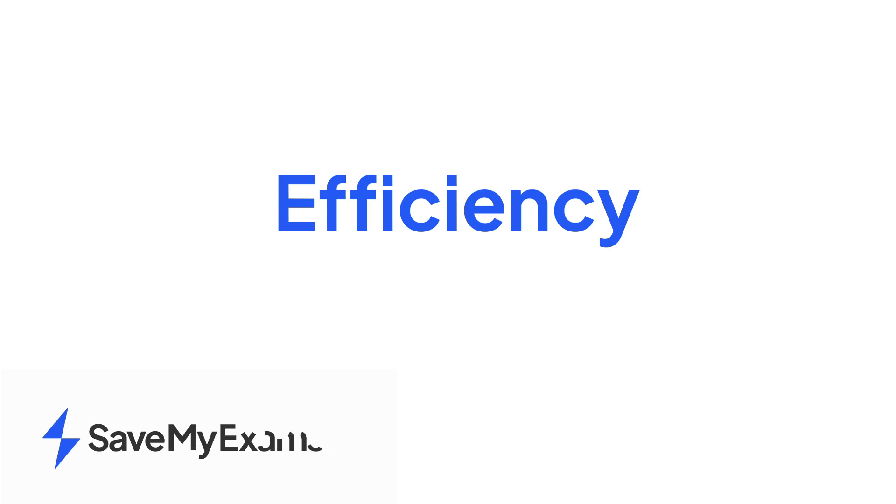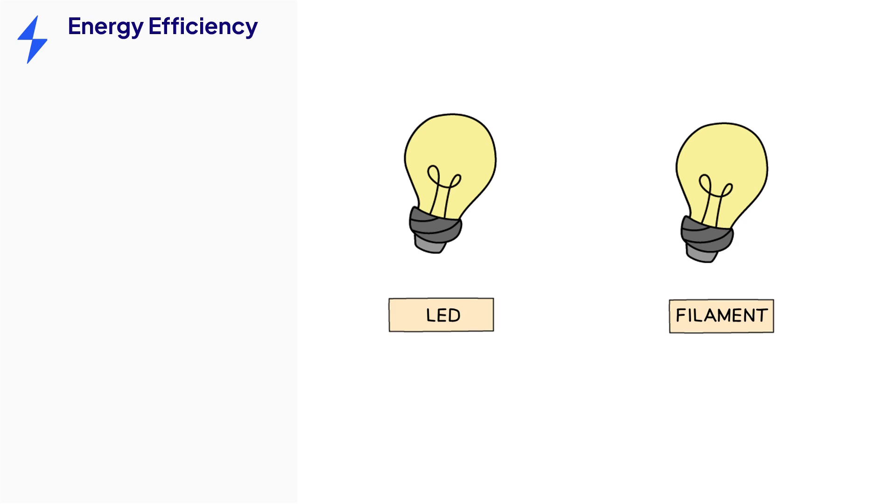This video is on the topic of efficiency. What does it mean to be energy efficient? LED bulbs are more efficient than filament bulbs. That means that the LED bulb requires less energy to produce the same amount of light. But how does it do this?